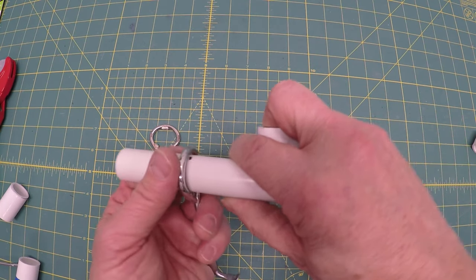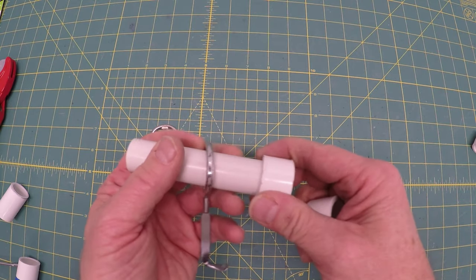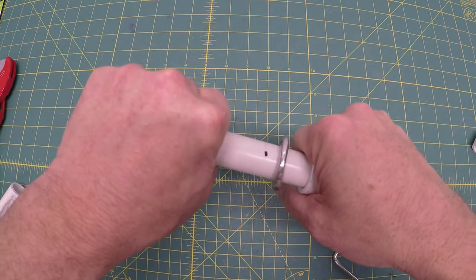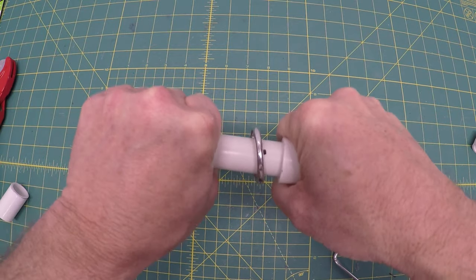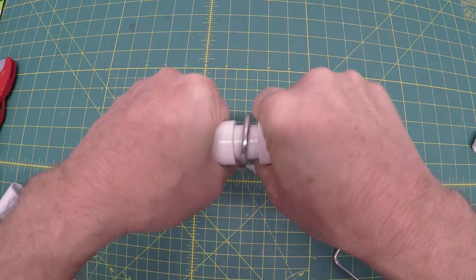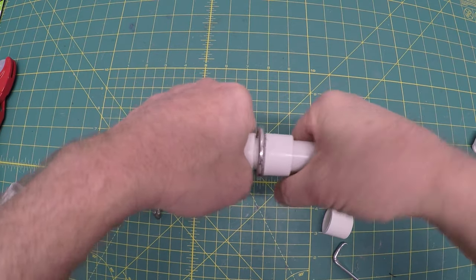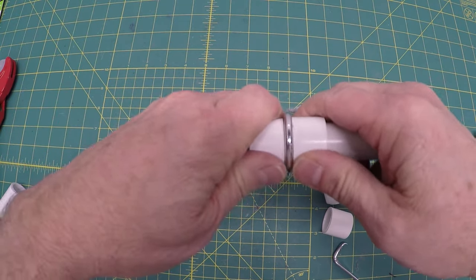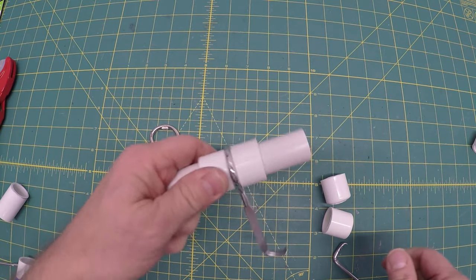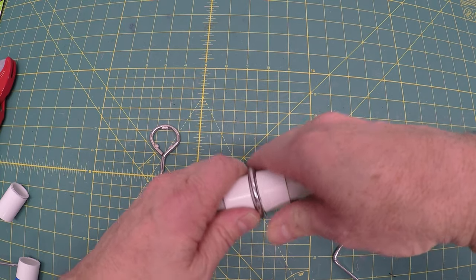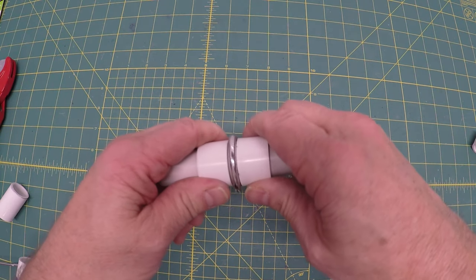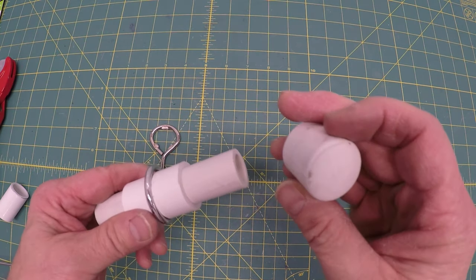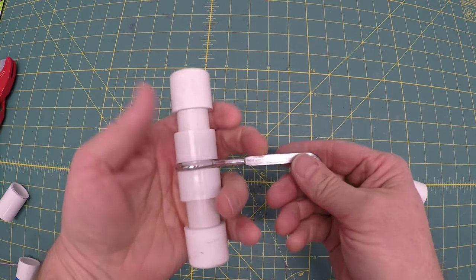So you assemble this by taking and sliding this on one end and this on the other end, and then just pushing them towards the middle. Now you can certainly glue this in place and I think I will once I make sure the build is exactly where I want it. You want a little bit of movement with the PVC pipe. I think that works good.